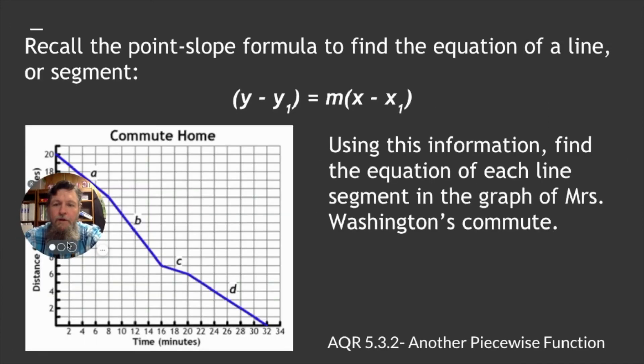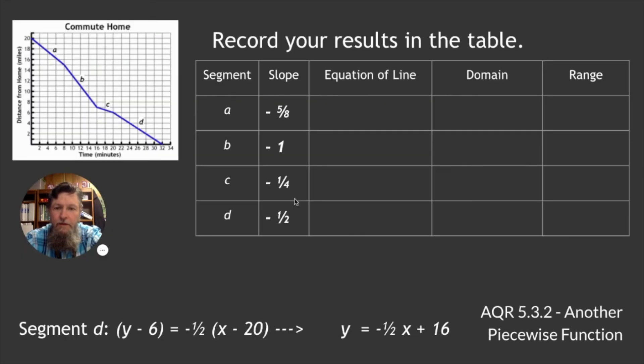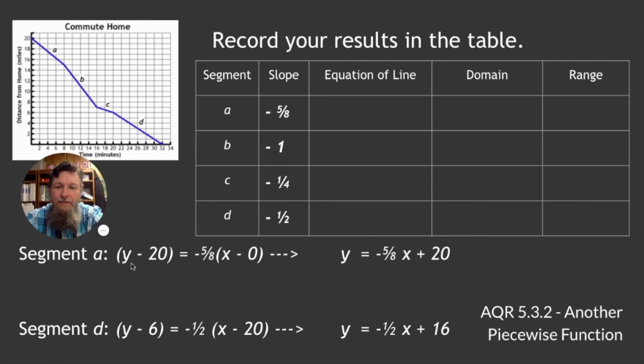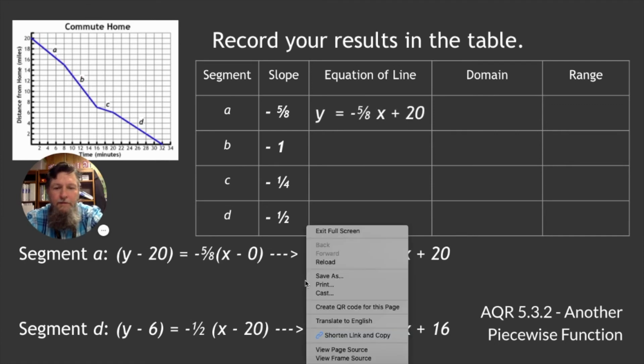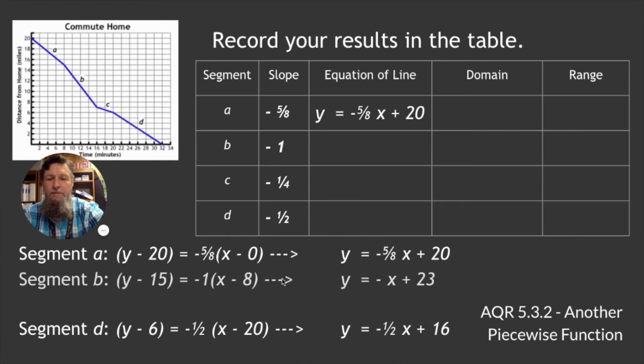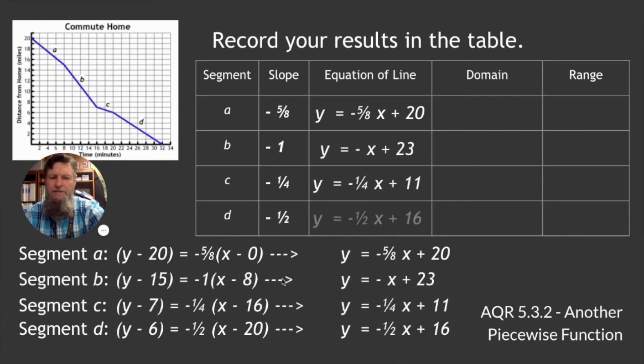So, recall the point slope formula and find the equation of a line of segment. Using this information, find the equation of each line segment in the graph of Mrs. Washington's commute. That's pretty simple. We're going to use this segment A, Y minus 20 equals minus 5 eighths, X minus 0. And there's your function. Segment D, segment B, segment C. Segment D, for some reason, didn't actually get put in there, but you got them all in there.